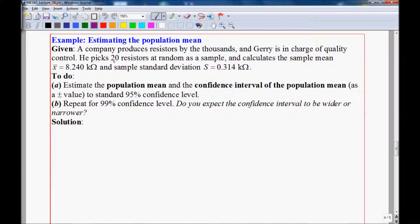He picks 20 resistors at random and samples them, and he calculates the sample mean of the resistance and the sample standard deviation. So let's estimate the population mean and its confidence interval to standard 95% confidence level.